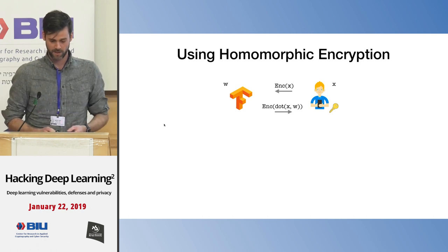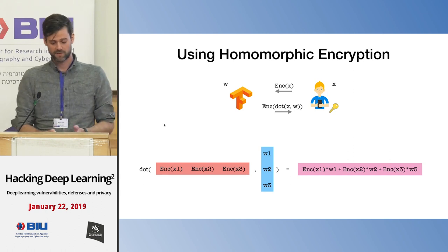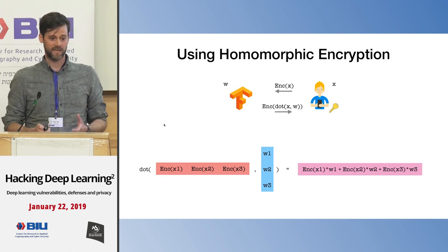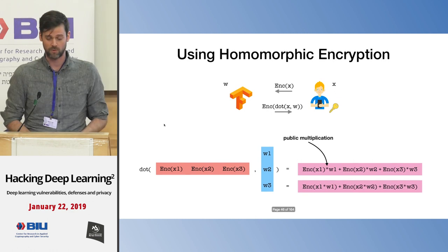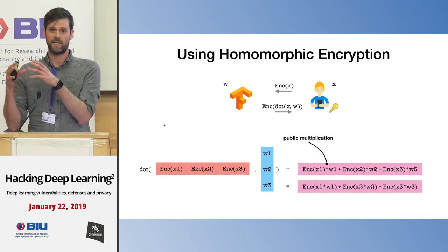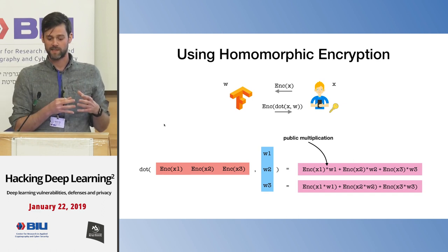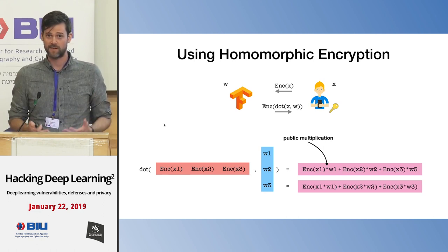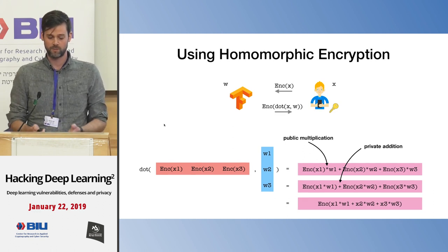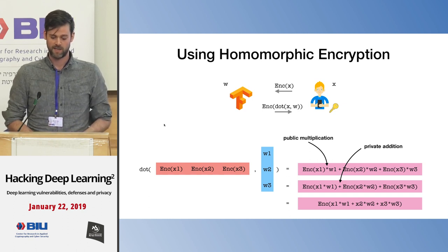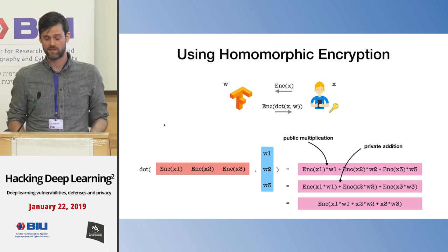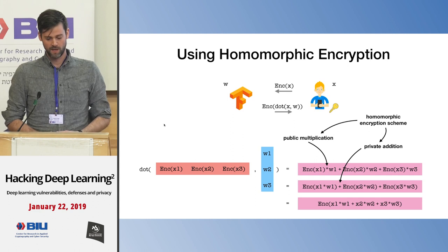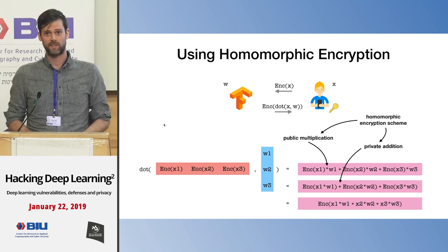Plugging this into a formula, the X values are now encrypted — ciphertexts. We need two operations. First, public multiplication: having a ciphertext and a plaintext value W, we move the plaintext value into the encryption. Second, private addition: we add the resulting ciphertexts together. If we can do those two operations, we can generate an encryption of the dot product to send back to the client. Standard encryption schemes like AES don't support this — we specifically need a homomorphic encryption scheme satisfying these two properties. If we can do that, we can perform predictions using a linear model on encrypted data.